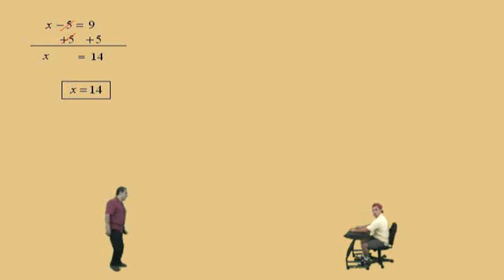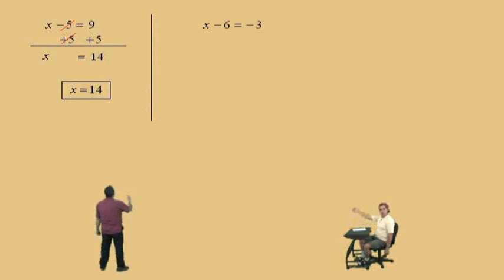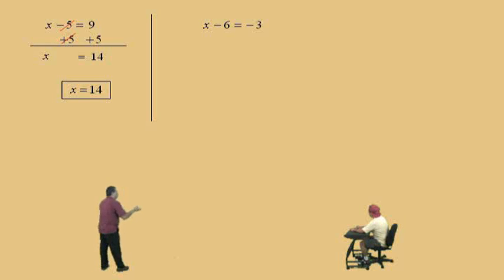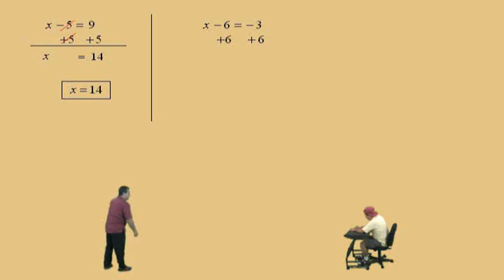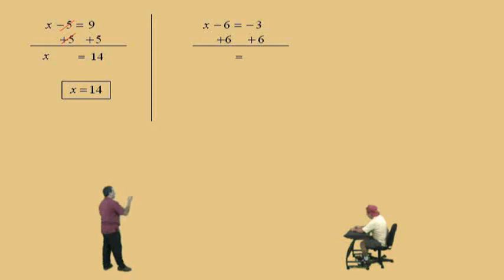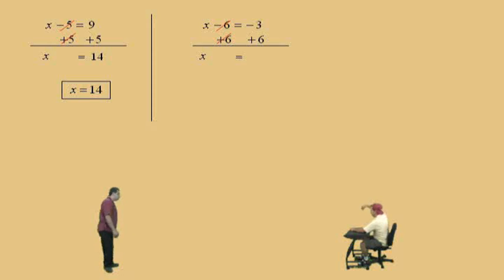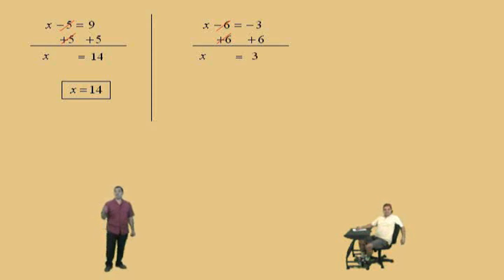There's a couple of points for you. All right, Charlie, let's do another one. x subtract 6 equals negative 3. We've got to get that one x by itself. So we have x plus a negative 6, or x subtract 6. So what do we need to do to both sides, Charlie? Add 6. That's right. We'll bring our bar and our equals right there. Negative 6 plus 6 is 0, so on the left-hand side we have x. What's negative 3 plus 6, Charlie? 3. Very nice. And so our answer is x equals 3.